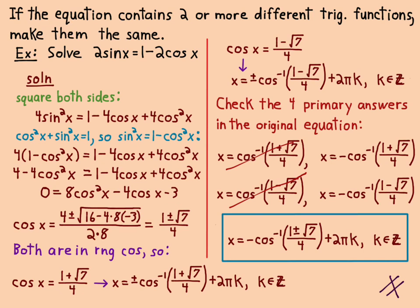My answers are those two. I put them together with the plus or minus on the square root of 7, and then add 2πk where k is an integer. That's it for this section. There's a lot of stuff in this section. Go over these problems multiple times, make sure you understand them, and do a lot of practice problems until you can get them right.